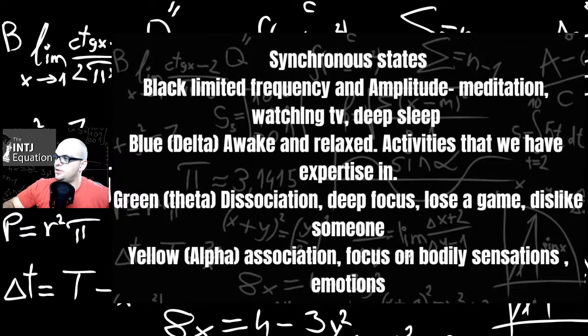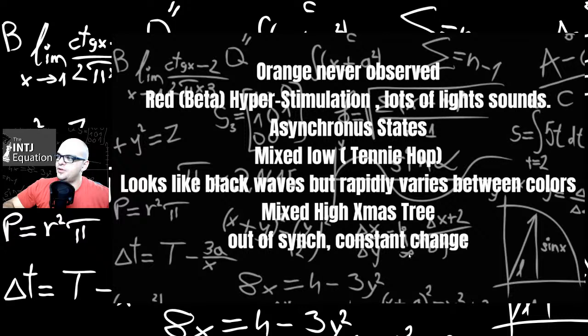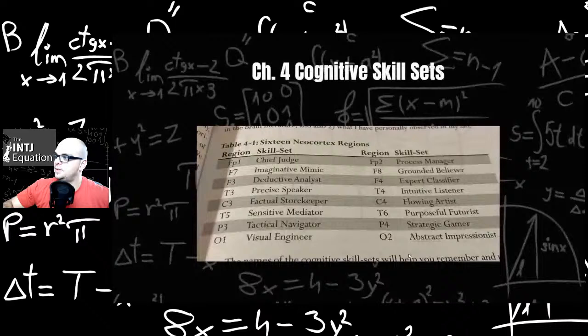Asynchronous states: mixed low tennis hop. That's a pattern that SE users typically use. Looks like black waves, but rapidly varies between colors. Mixed high Christmas tree lights, out of sync, constant change, which is pretty indicative of NE users.